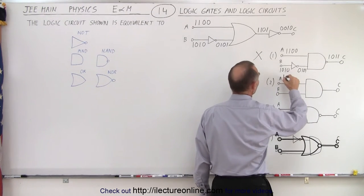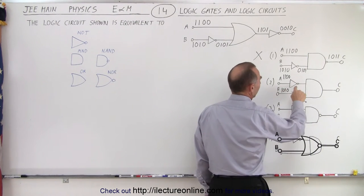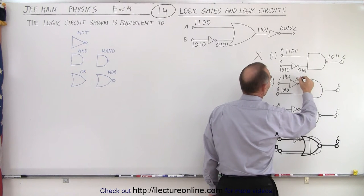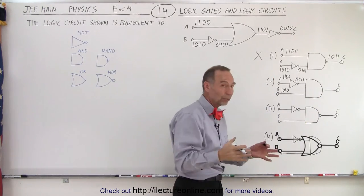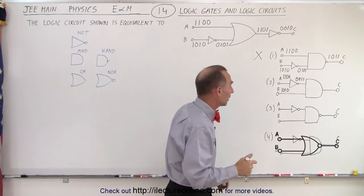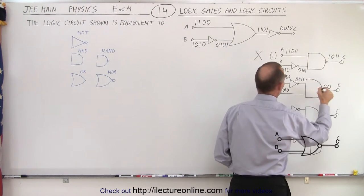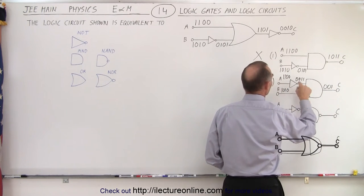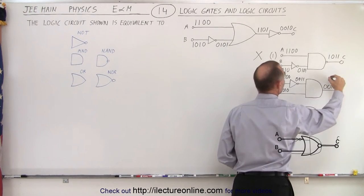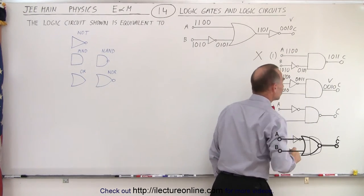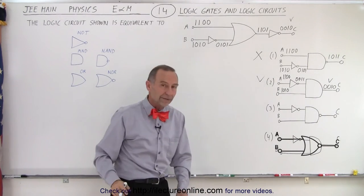For circuit 2: top input 1, 1, 0, 0 and bottom 1, 0, 1, 0. The NOT gate turns the bottom into 0, 0, 1, 1. With an AND gate — both must be high for a high output: 1 and 0 → 0; 0 and 0 → 0; 1 and 1 → 1; 0 and 1 → 0. Output is 0, 0, 1, 0 — exactly the same as our target. Circuit 2 is the answer.